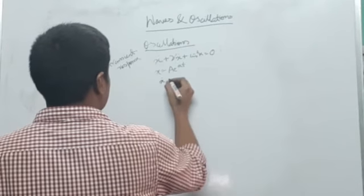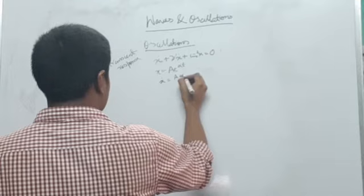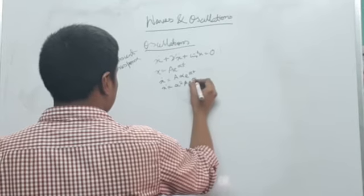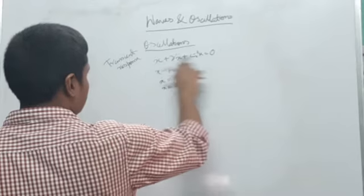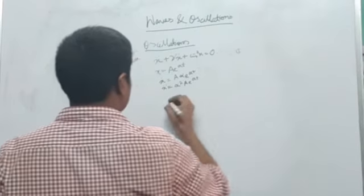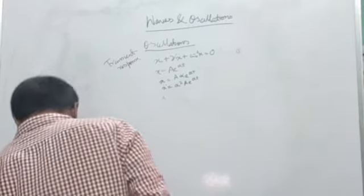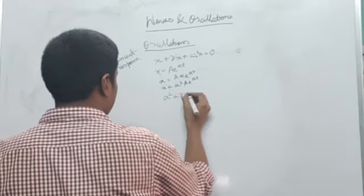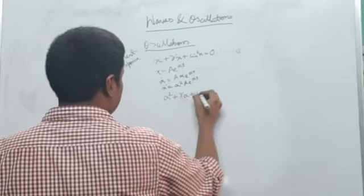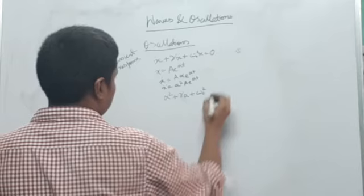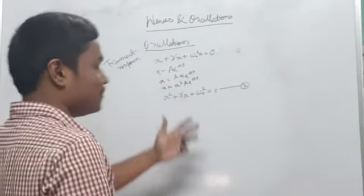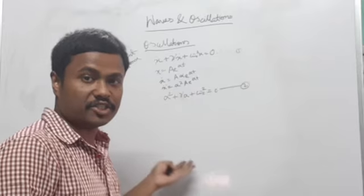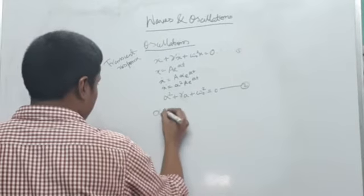If you take a derivative with respect to t, you get an extra factor of alpha. Taking two derivatives gives you alpha-squared times A times e to the power of alpha-t. Substituting this into the differential equation and taking out common factors, you're left with: alpha-squared plus gamma times alpha plus omega-naught squared equals zero. This no longer looks like a differential equation — it's an algebraic quadratic equation in alpha, which we can solve using the quadratic formula.